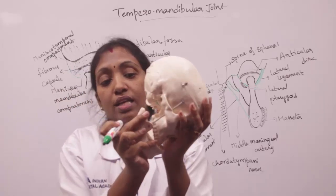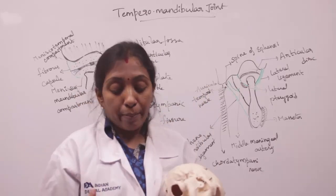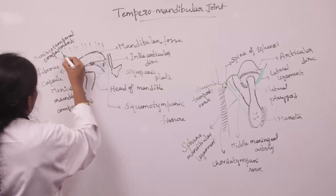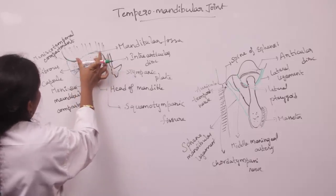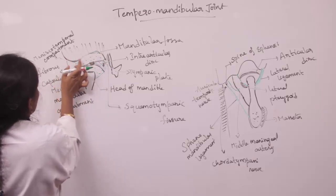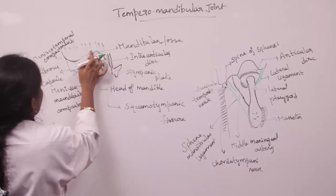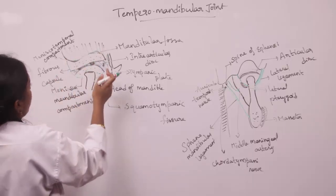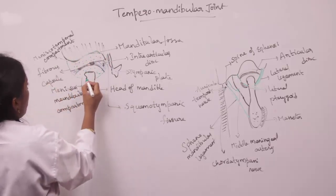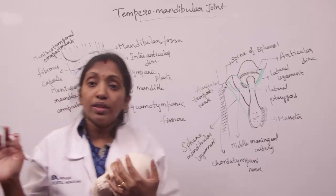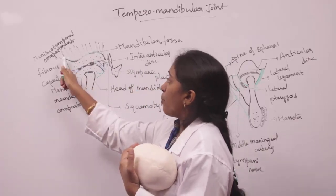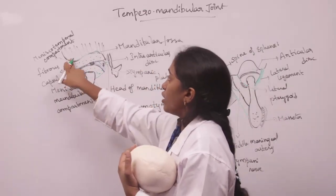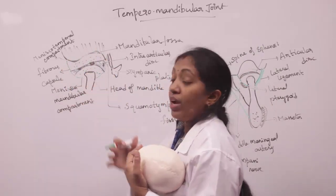Below, the articular surface is formed by the head of the mandible. So, above we have the articular tubercle and anterior part of mandibular fossa, and below we have the head of the mandible. These are the articular surfaces that truly form the joint.